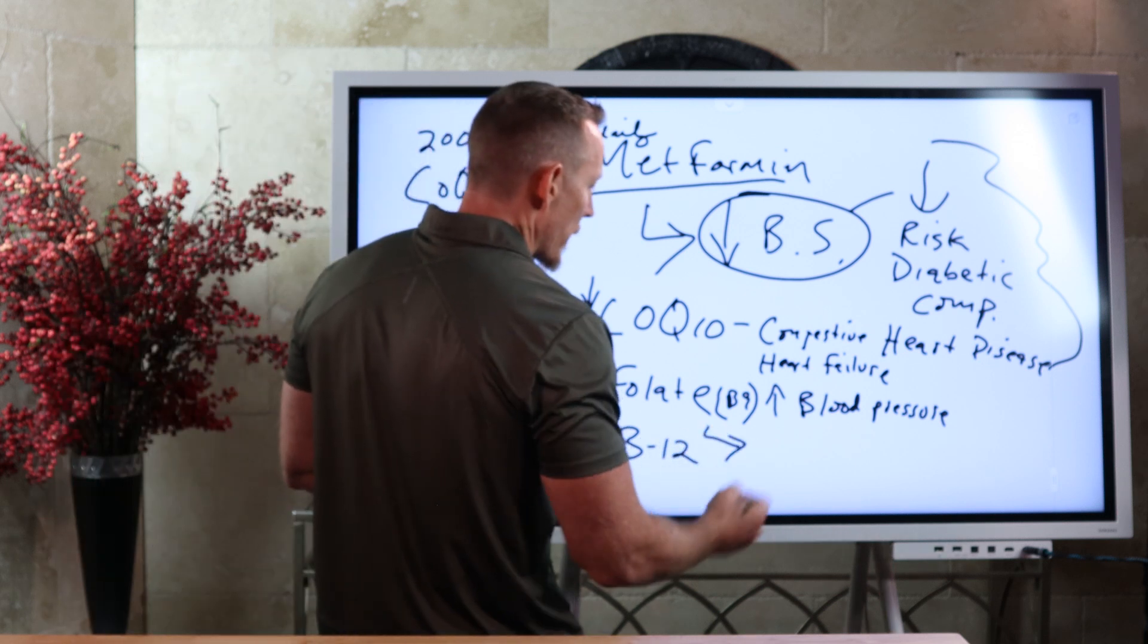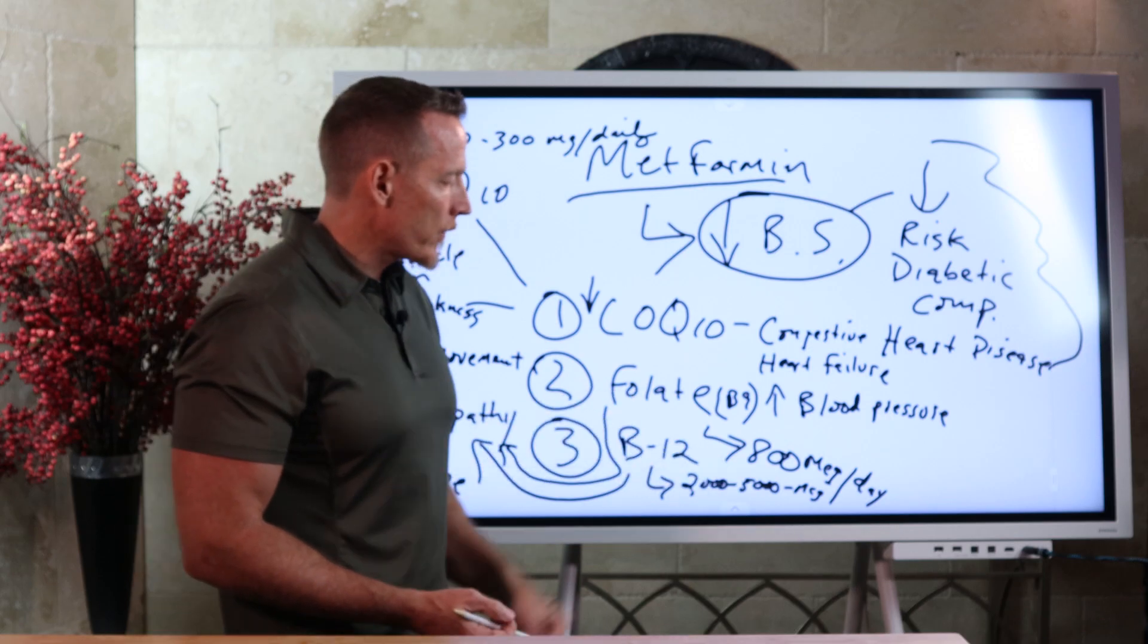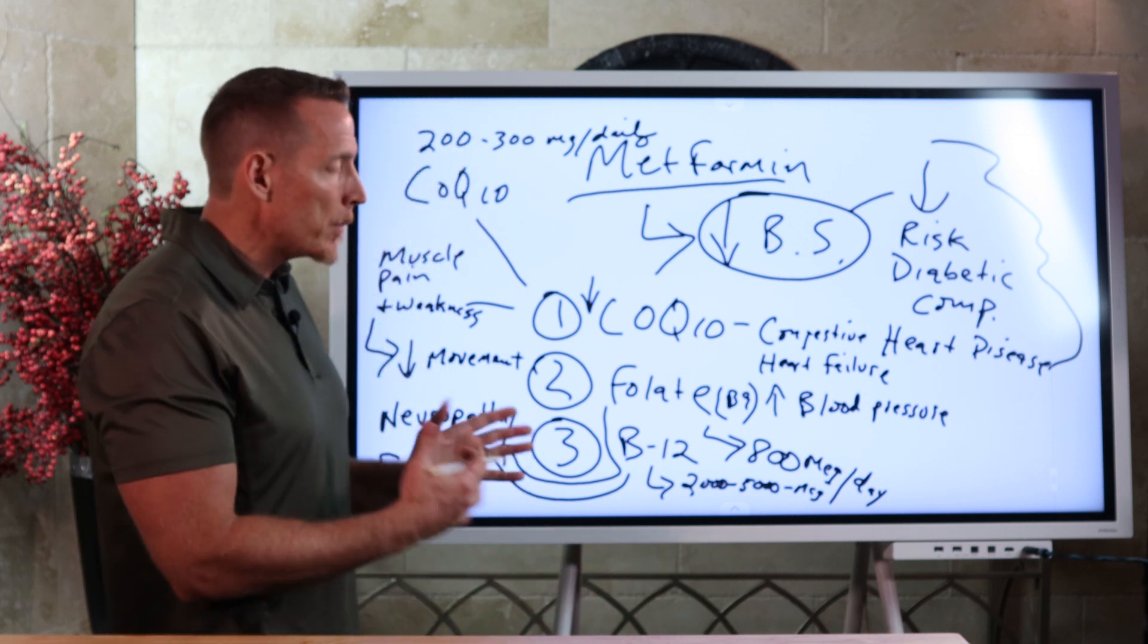Now, how much folate? Approximately 800 micrograms a day. And with B12, anywhere from 2,000 to 5,000 would be very beneficial, very helpful in this type of situation. And that's micrograms. And both of these are per day. So that's what you're looking for, 800 with folate and then 2,000 to 5,000 with vitamin B12.